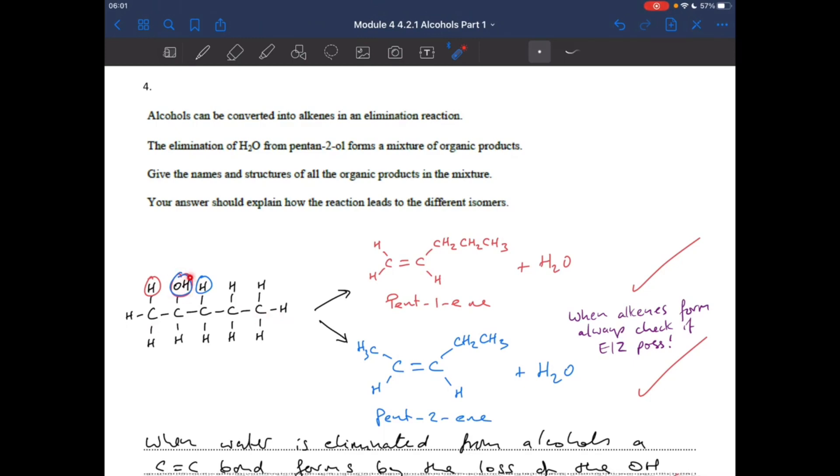So to get the water molecule out, we obviously take the OH and we take an adjacent hydrogen. You can see in red, I've got a red and a blue circle around there, so we'll focus on the red first. So the red OH and that red H there, that's going to put a double bond here. It's going to lead to pent-1-ene and obviously water. If we go for that adjacent hydrogen, the one I've done in blue, you get pent-2-ene and water.